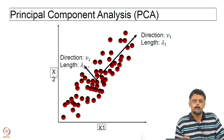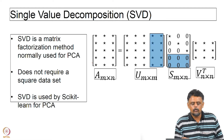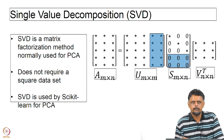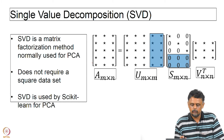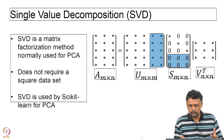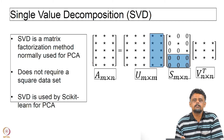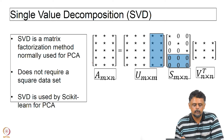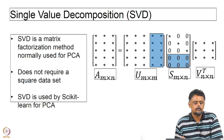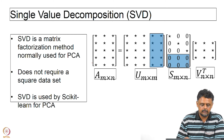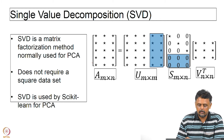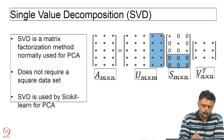That is what Principal Component Analysis helps us to determine. We will not go through the actual algorithm in detail, but PCA is accomplished using what is known as Singular Value Decomposition — SVD. Note it is 'singular' not 'single' value decomposition. It is a matrix factorization method normally used for PCA, and it does not require a square data set.